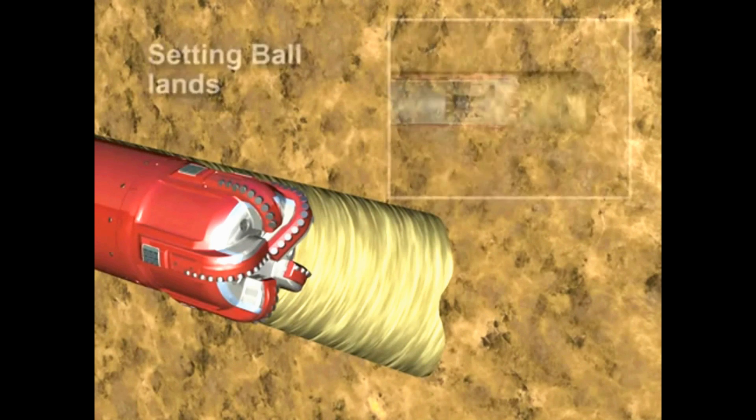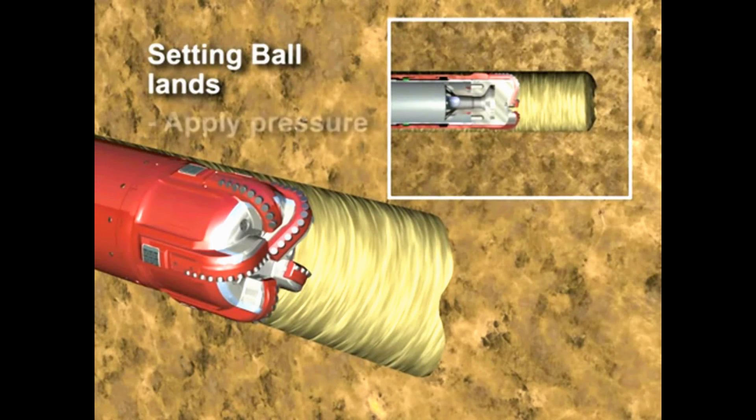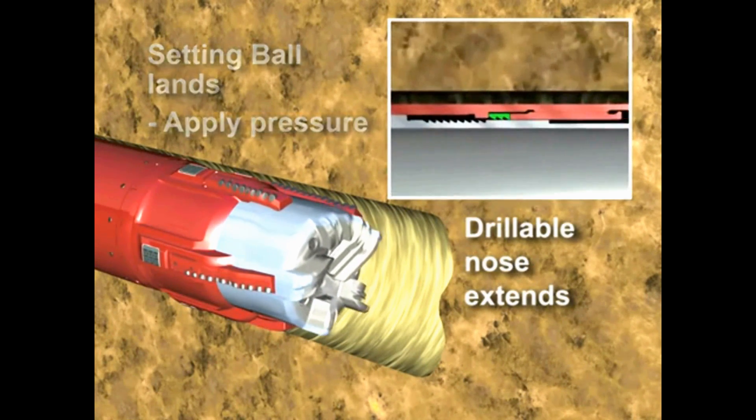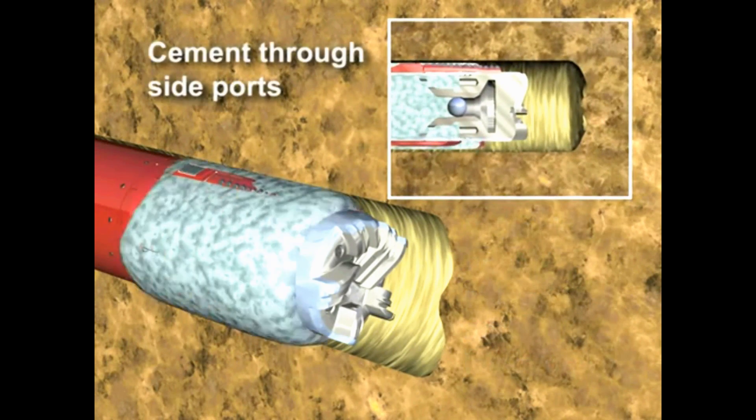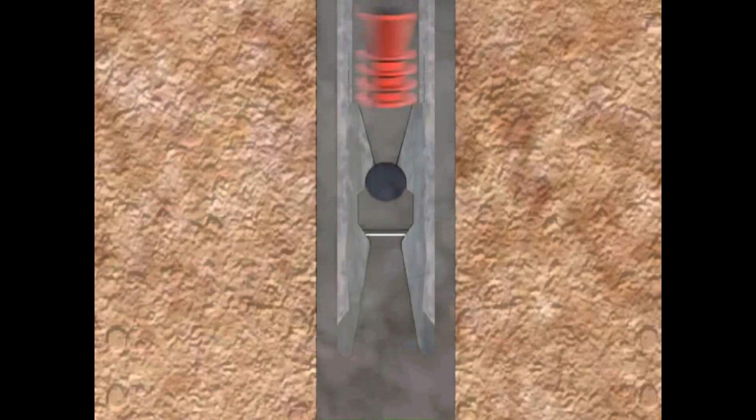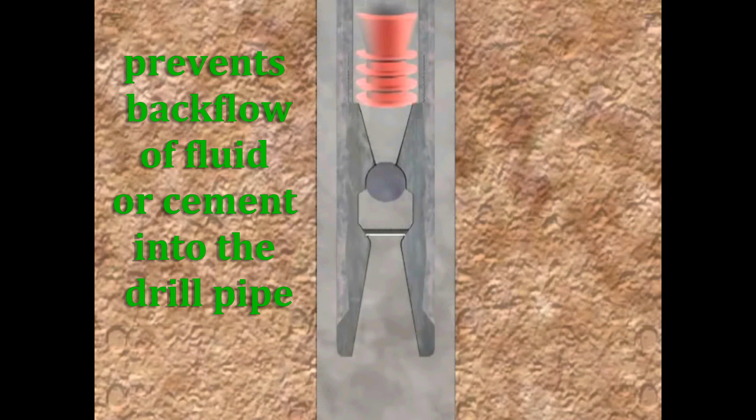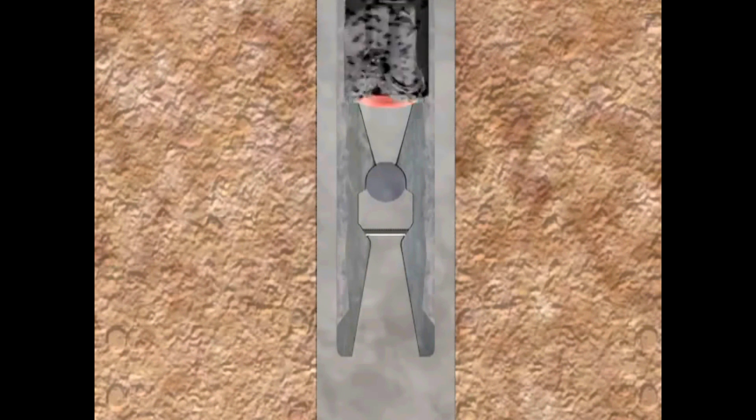Inside the float valve, the ball and seat type valve keeps the pipe closed while the casing is being run and opens it while the cement is being pumped in. The ball and seat valve also prevents back flow of either the fluid or the cement into the drill pipe.